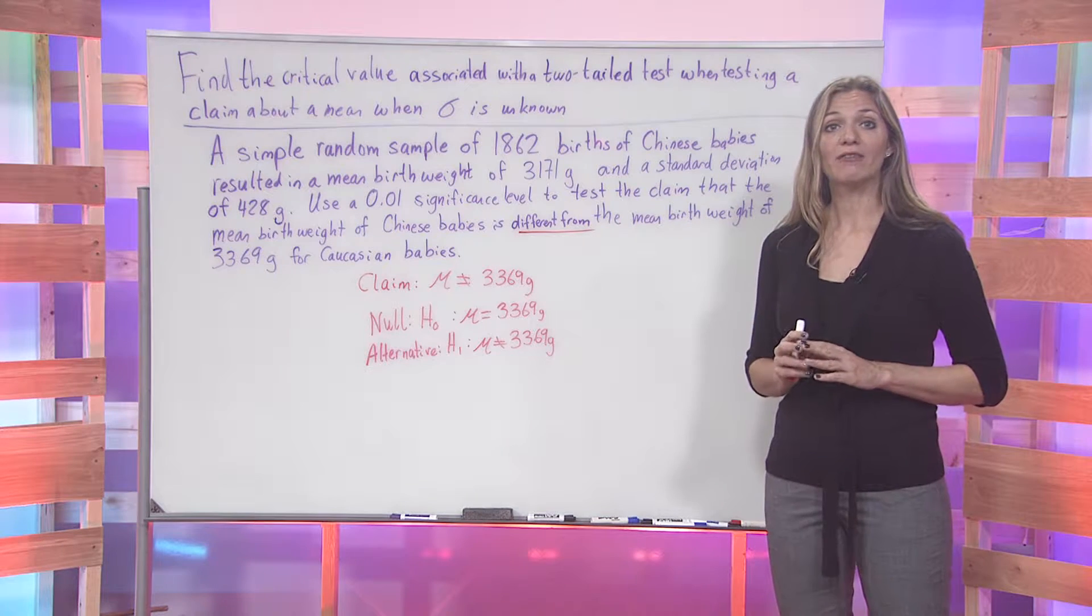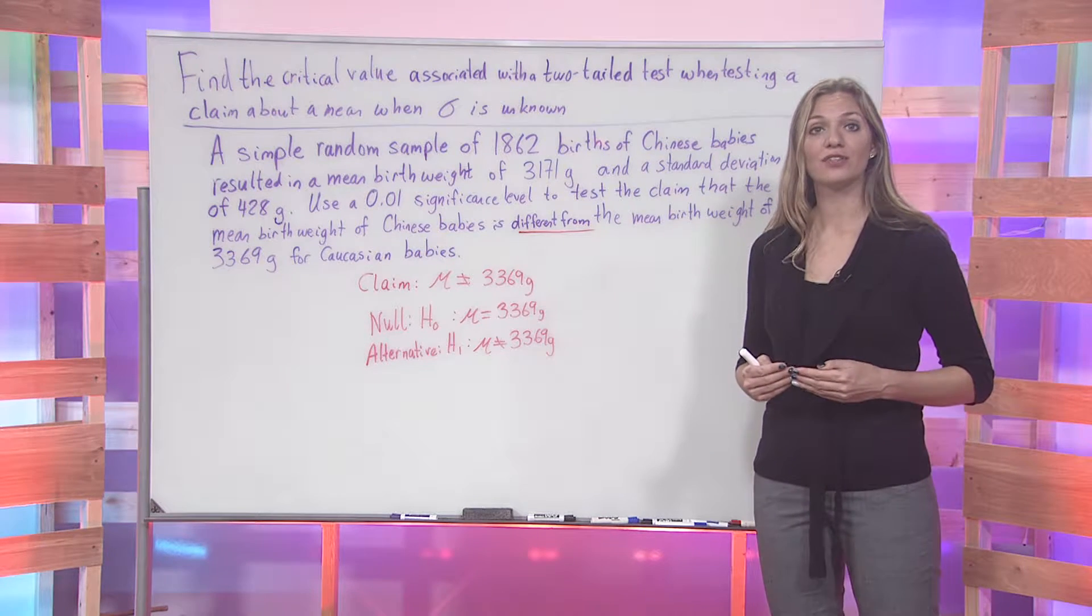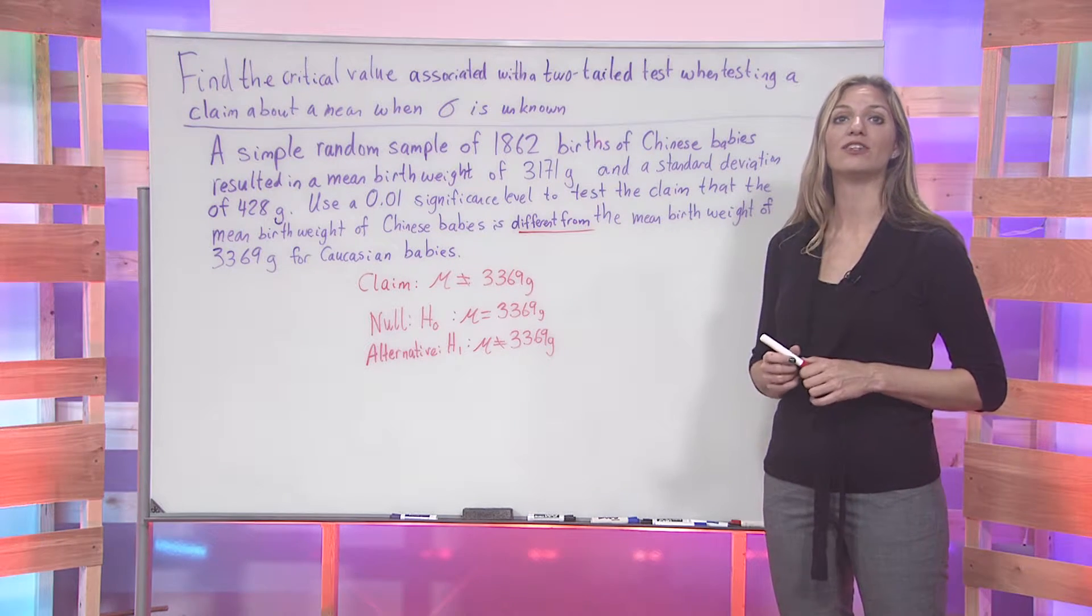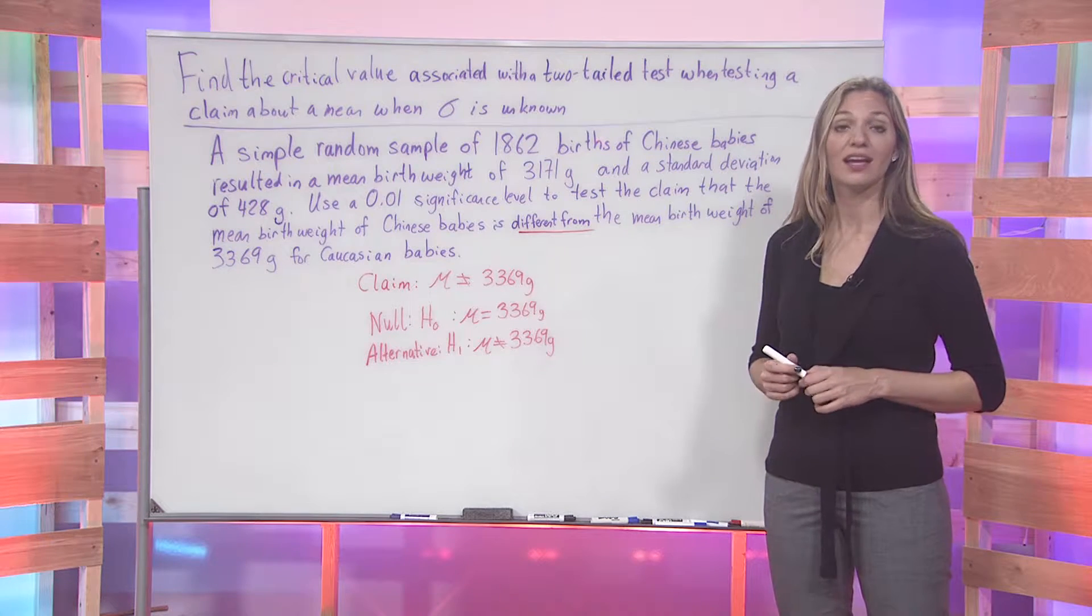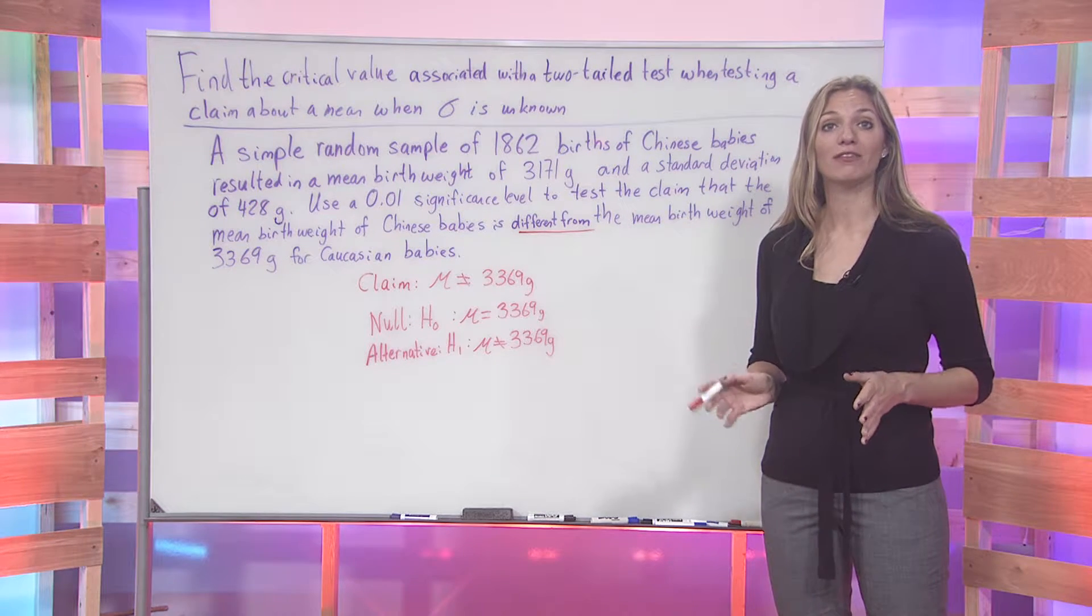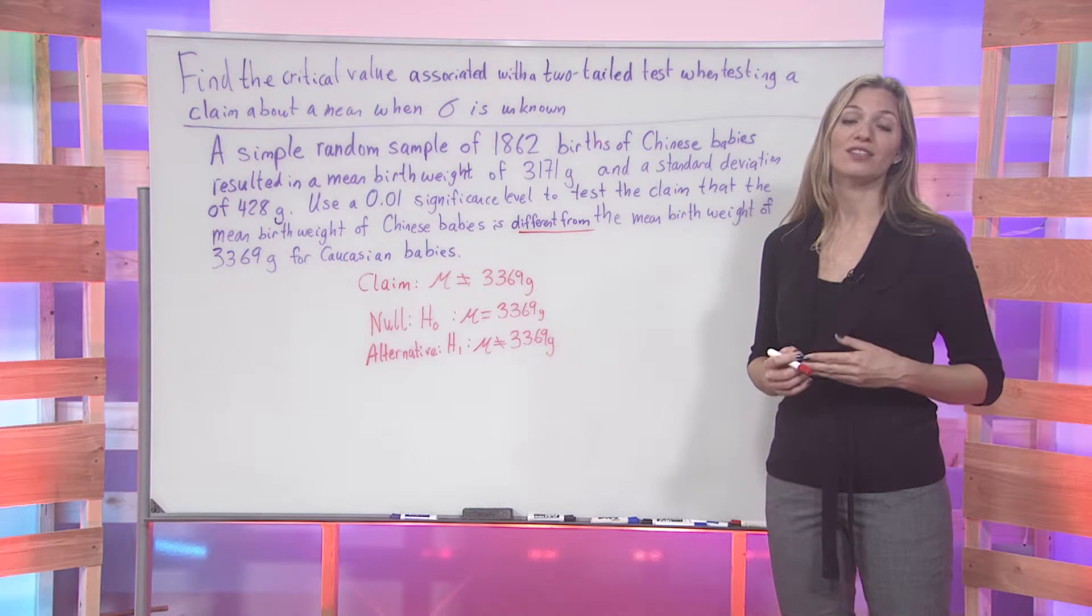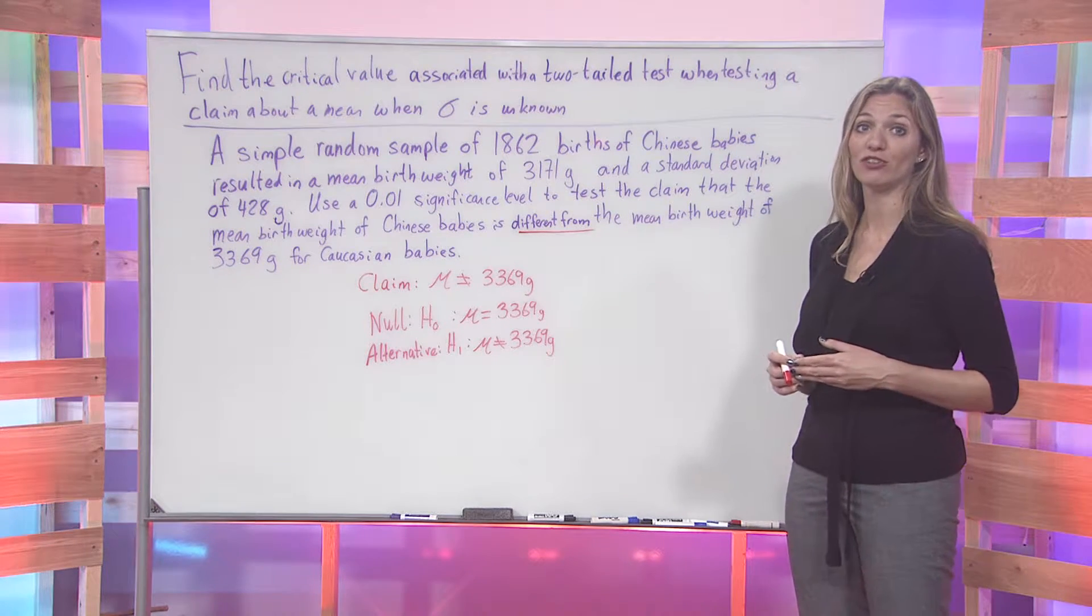Since we have an inequality, this is what allows us to know that we are going to be using a two-tailed test. Furthermore, nowhere in this problem are we given a value of sigma, the standard deviation of the population.